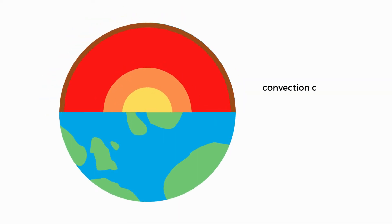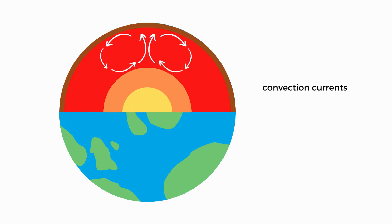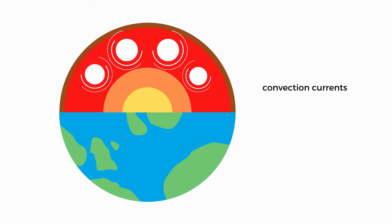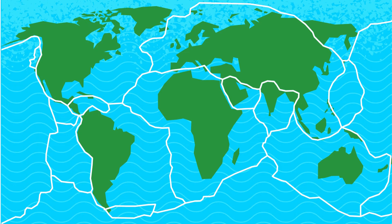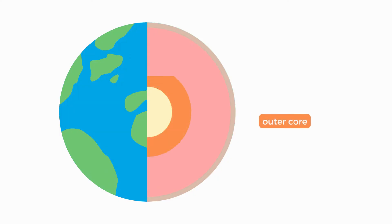In the mantle, there is something called convection currents that drive the movement of the crust above it. The heat from the core causes hot magma to rise up to the crust, where it cools. The magma then sinks back down to the bottom of the mantle, where it is reheated. These cycles continue over and over again and play an important role in continental drift and activity at plate boundaries.